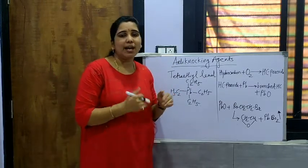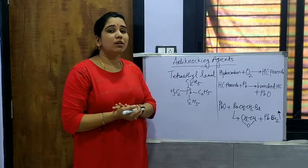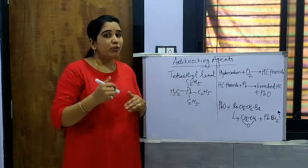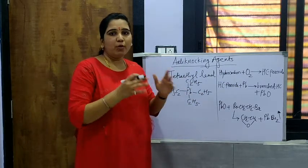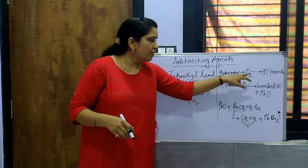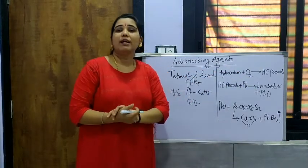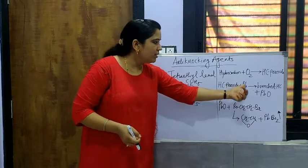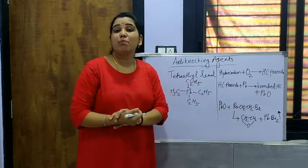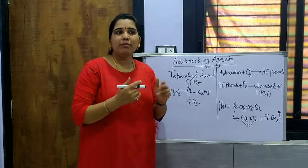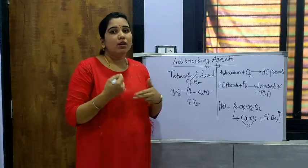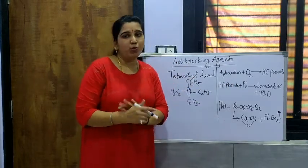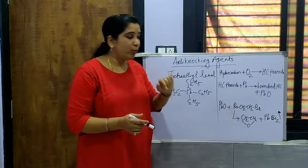In the internal combustion engine, as we have seen, in the cylinder particularly, the hydrocarbon is already present there as a fuel. We will use fuel which is favorable to that particular type of SI engine. So hydrocarbon, when treated with oxygen, we can get hydrocarbon peroxide. That hydrocarbon peroxide, when treated with lead (Pb), results in the formation of branched hydrocarbon. As we know, branched hydrocarbon is more favorable comparatively, so Pb is used to form branched hydrocarbon type of fuel.